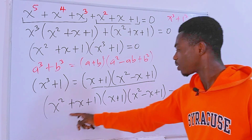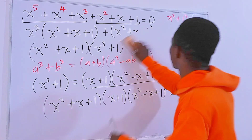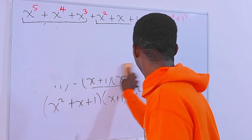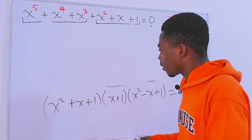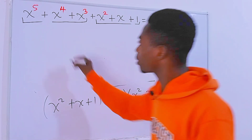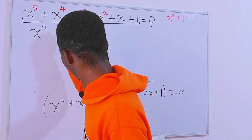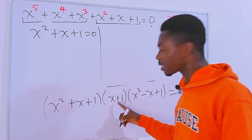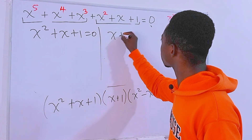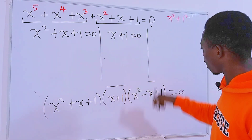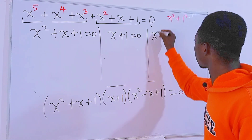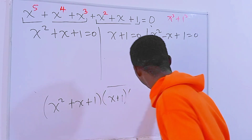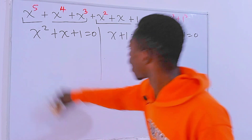At this point we can write three equations. The first equation is x² + x + 1 = 0. The second equation is x + 1 = 0. And the third equation is x² − x + 1 = 0.